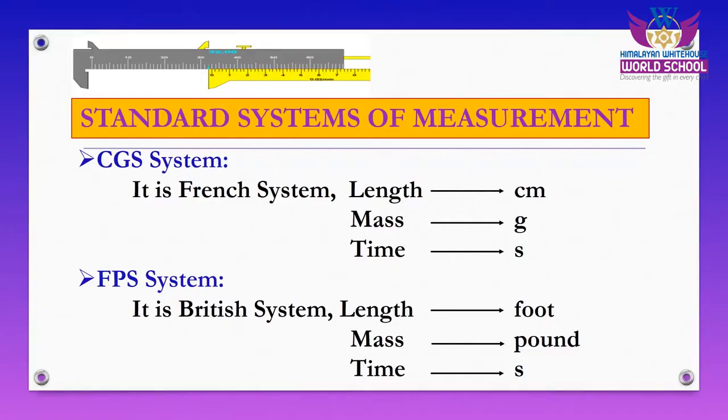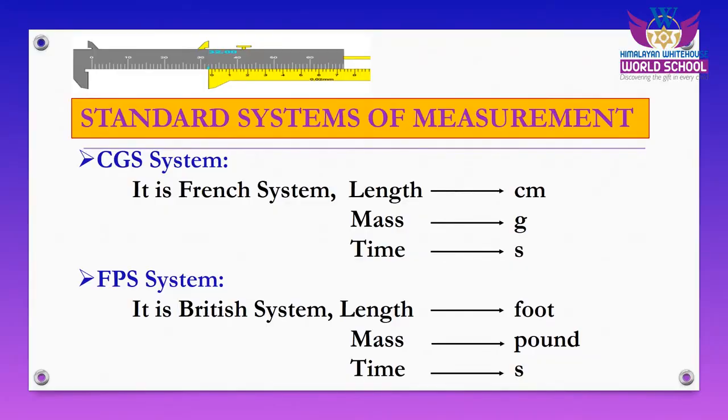Now let me describe the standard systems of measurement. We have four different standard systems. The first is the CGS system, which is a French system. It includes three quantities: length, mass, and time. Length is measured in centimeter, mass in gram, and time in second.